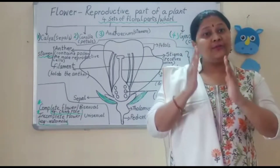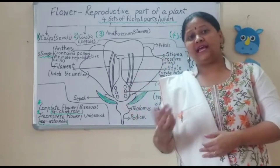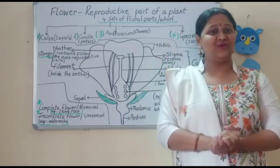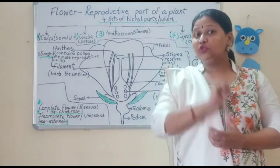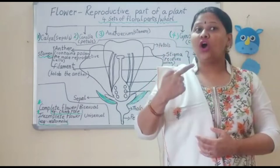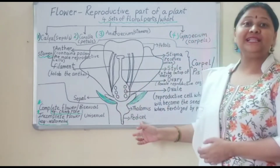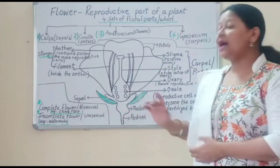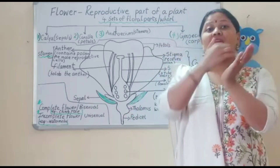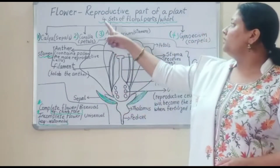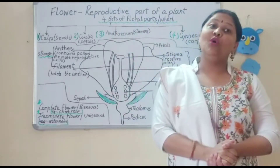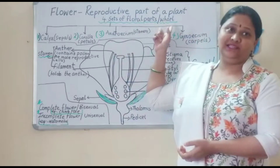Flowers are present on the axis. The axis can be a short axis or it can be a long axis. It comprises of two parts: the first part is the stalk, which is also known as pedicel, and the swollen part is known as thalamus. Now above this thalamus, all the four sets of floral parts are present, and each set is also known as a whorl.